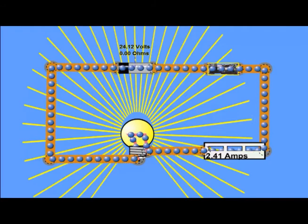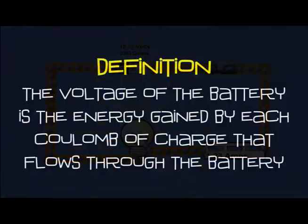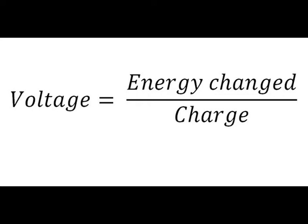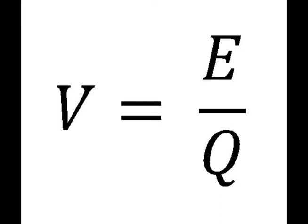It's this potential energy that we call the voltage that makes the electric current flow. And the bigger the voltage, the bigger the current. The voltage of the battery is the energy gained by each coulomb of charge that flows through the battery. For example, a battery with a voltage of one volt means one joule of energy is gained by each coulomb of charge. Using symbols: V is the voltage, E is the energy, and Q is the amount of charge.